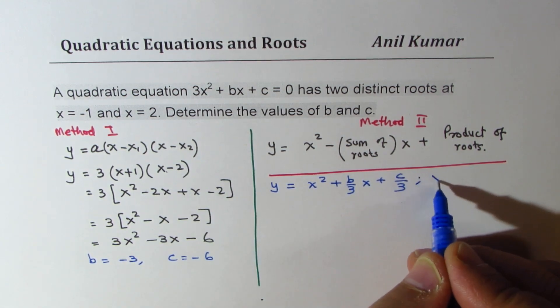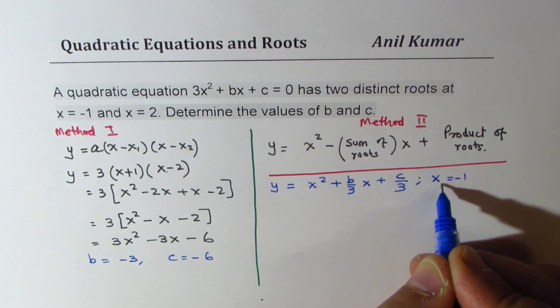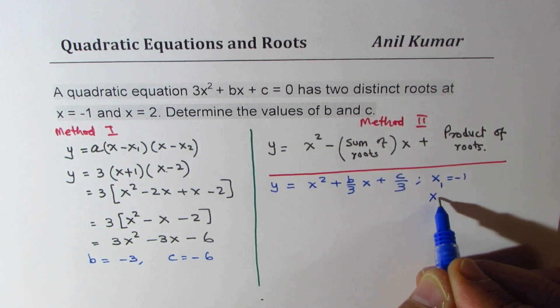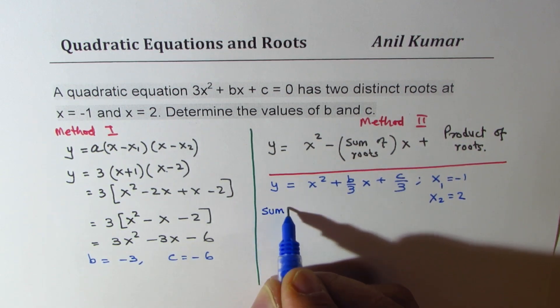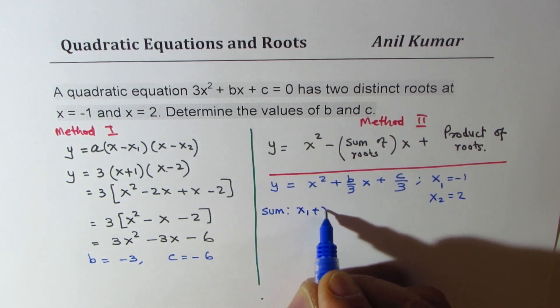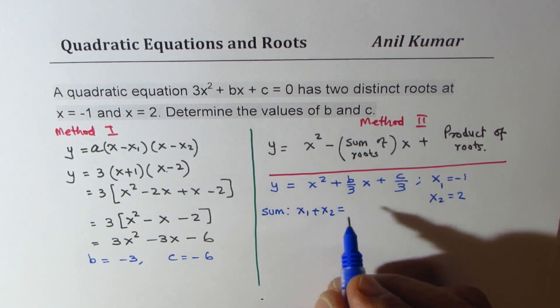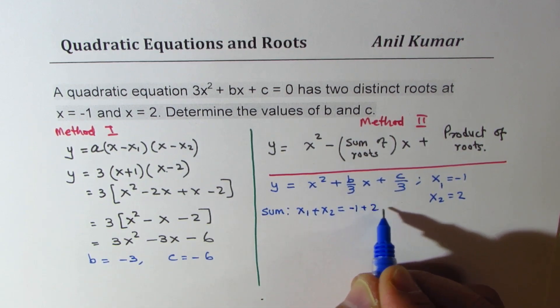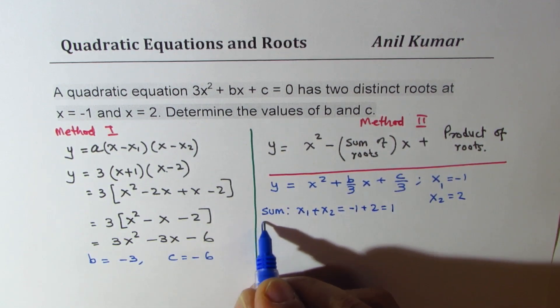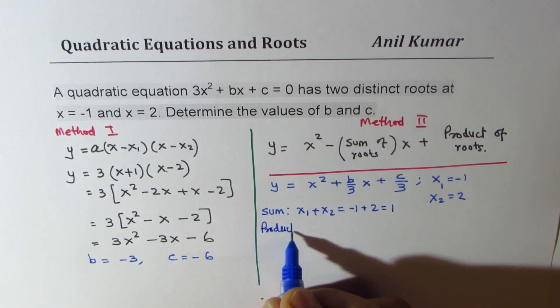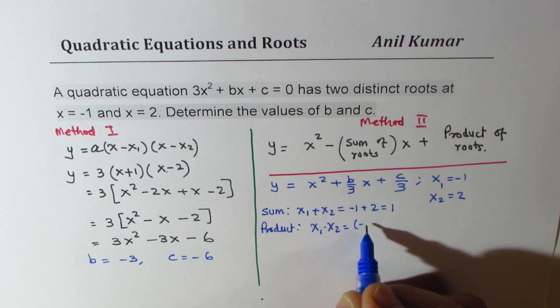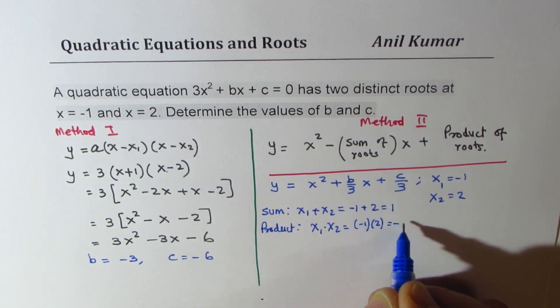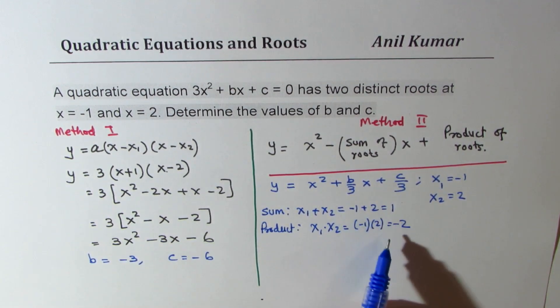Now, what do you know here is that x equals minus 1, that is the first root, and the second root is 2. So what is the sum? Sum will be x1 plus x2. Just add them. So we have minus 1 plus 2, which is 1. And what is the product? Product is x1 times x2, which is minus 1 times 2, which is minus 2.